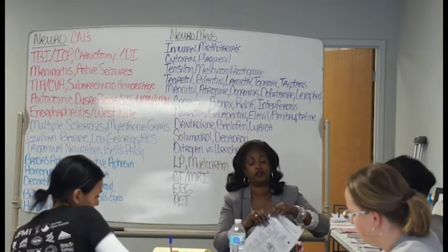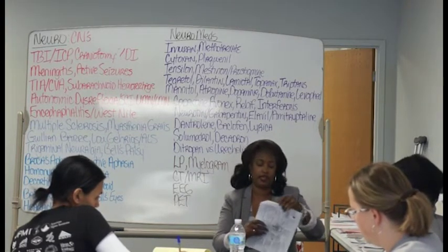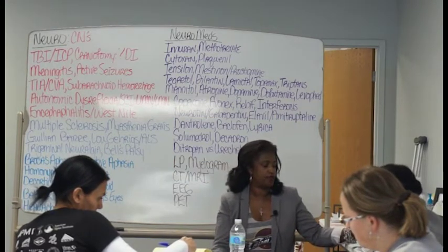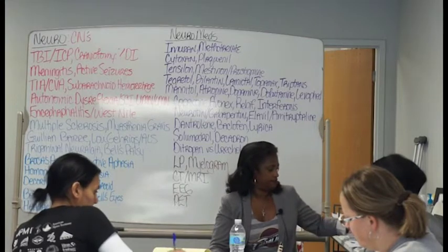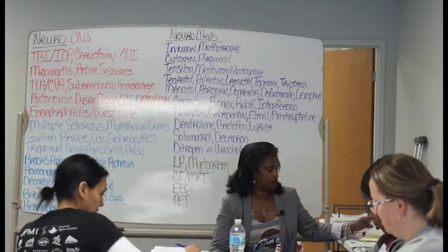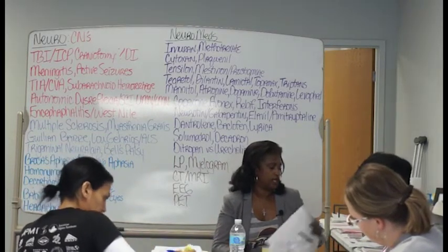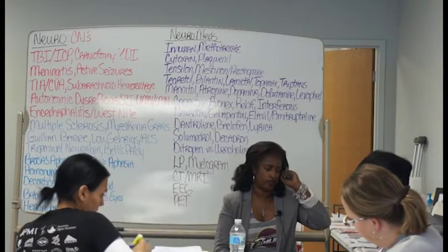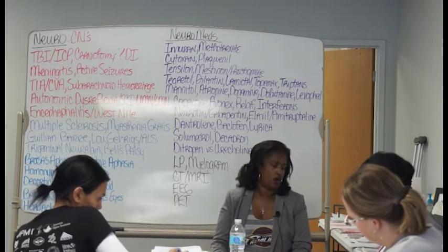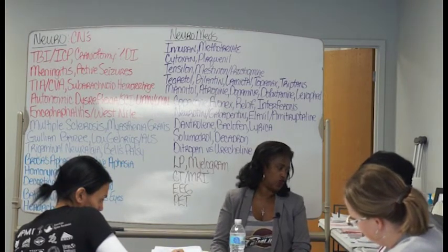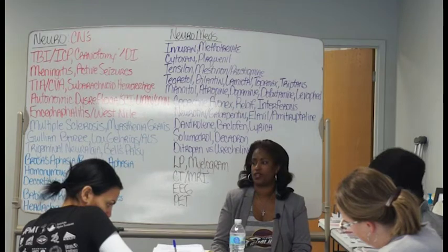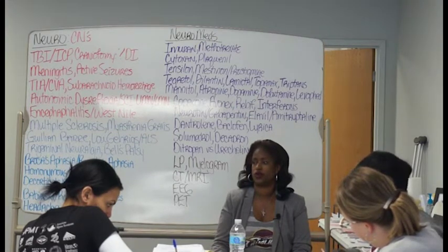Looking a bit further down the handout, you'll see pinpoint pupils — remember we talked about those; that indicates a stroke. Then there's an image that looks like an ear leaking fluid. That is called otorrhea. Otorrhea and rhinorrhea are signs associated with a basilar skull fracture.